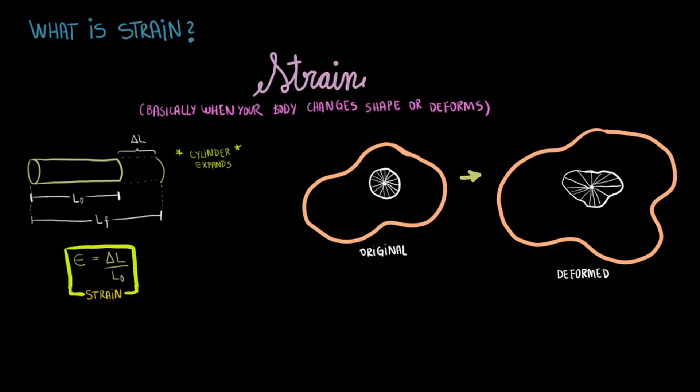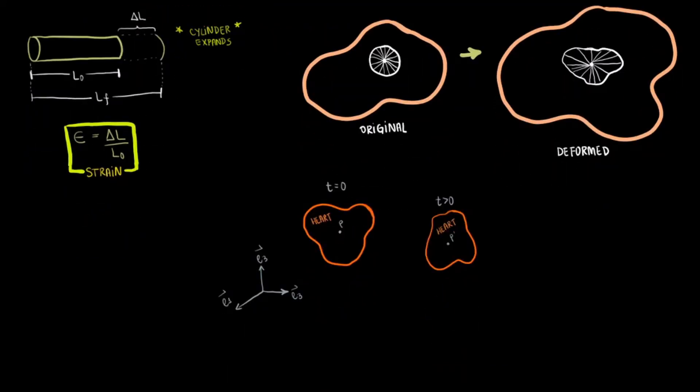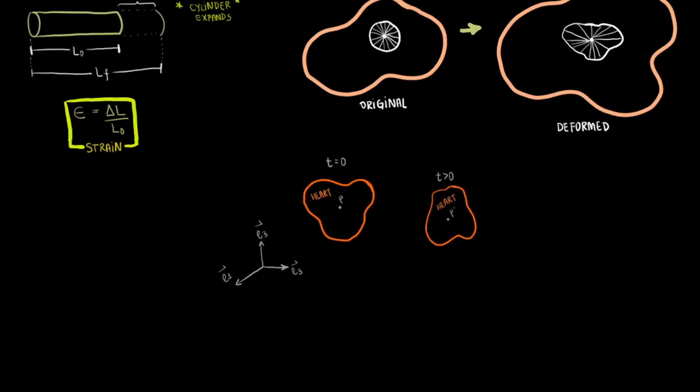Now, picture this general arbitrary shape as a small section of your heart at time 0. Now fast forward to time t greater than 0. The shape of that section changed as the heart moved. Let's say that the first heart section is in the original, undeformed, or referenced coordinates. The second heart section, at t greater than 0, is in the current or deformed coordinates.